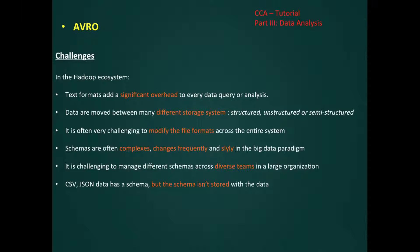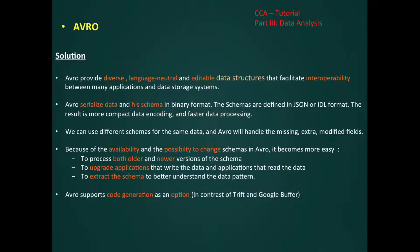It is often very challenging to modify the file format across the entire system. Schemas are often complex, change frequently, and vary slightly. In the big data paradigm, it is challenging to manage different schemas across diverse teams in a large organization. CSV and JSON data has a schema, but the schema isn't stored with the data.